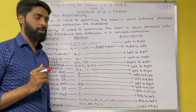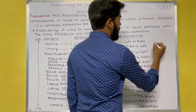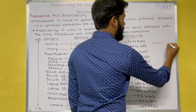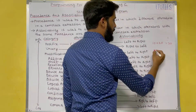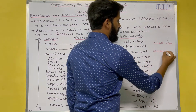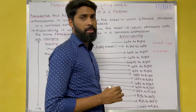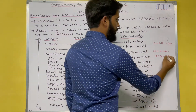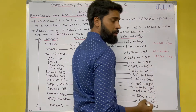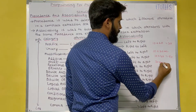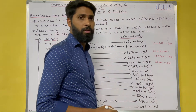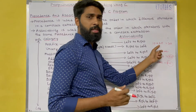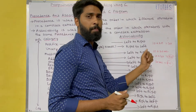Before that, we are going to see one question. If I ask you what is the answer for 10 plus 20, you directly say the answer is 30. But if I ask 10 plus 20 into 2, some say 10 plus 40 equals 50, and somebody says 30 into 2 equals 60. So here we got two types of answers. The first one is a simple expression and the second one is a complex expression.